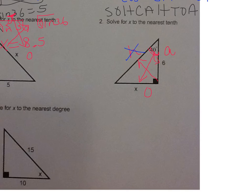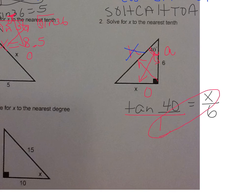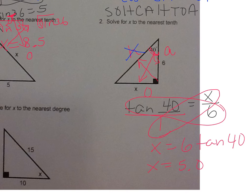So it's going to be tan. Then your angle goes right next to it. 40 equals O over A, x over 6. So you're going to put tan 40 over 1, and cross multiply. So I have 1 times x is x equals 6 times tan 40. Put the 6 in front. 6 times tan 40. Just plug that in your calculator just like that. 6 tan 40. And you get 5.0. That's to the nearest tenth.